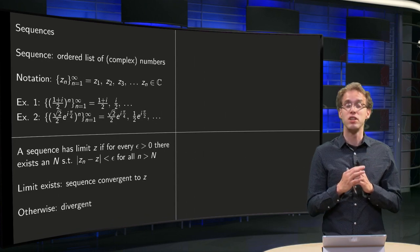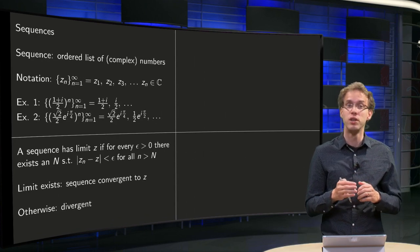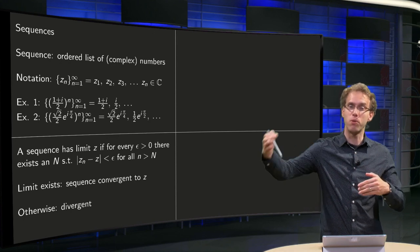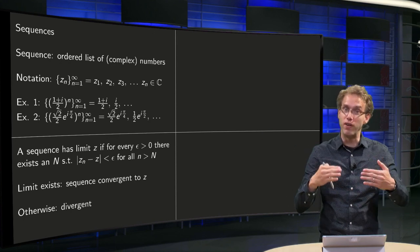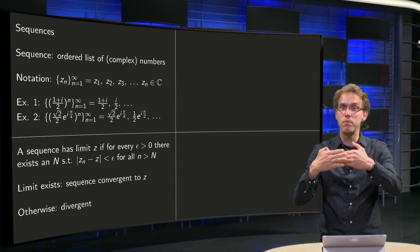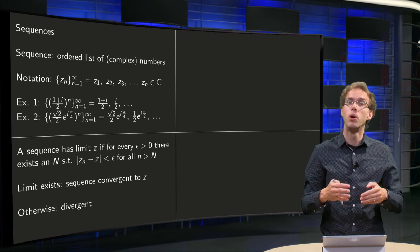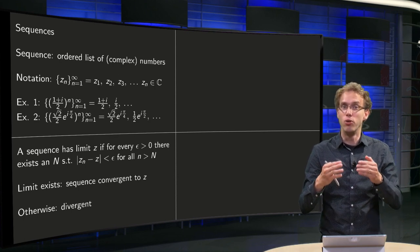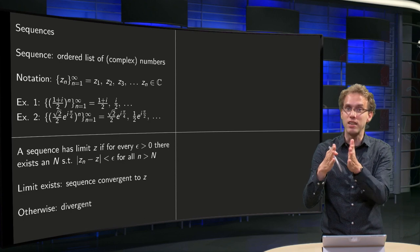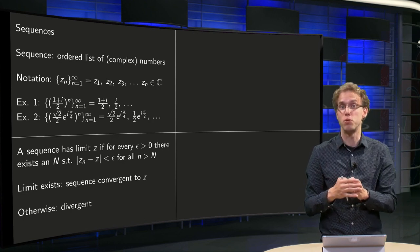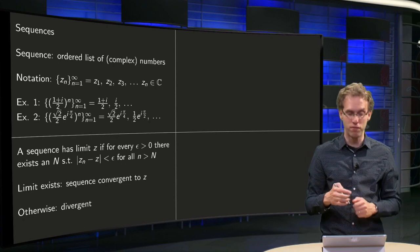So when does a sequence converge? It is the same as in the real case. A sequence of complex numbers converges if eventually you get very close to a limit point z. So what does very close mean in terms of complex numbers? It means that the norm of z_n and z, the difference in norm, gets arbitrarily small.